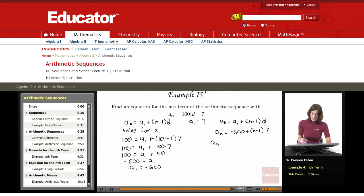So a sub n equals negative 600 plus 7n minus 7. This equals a sub n equals 7n minus 607. Just simplifying.